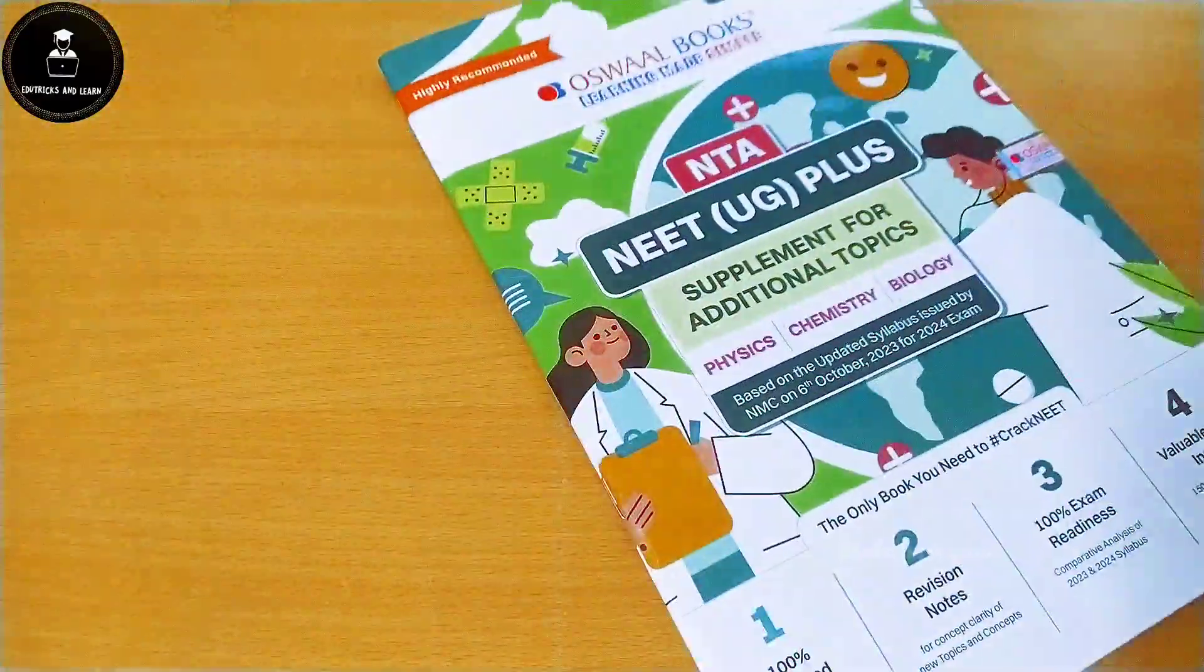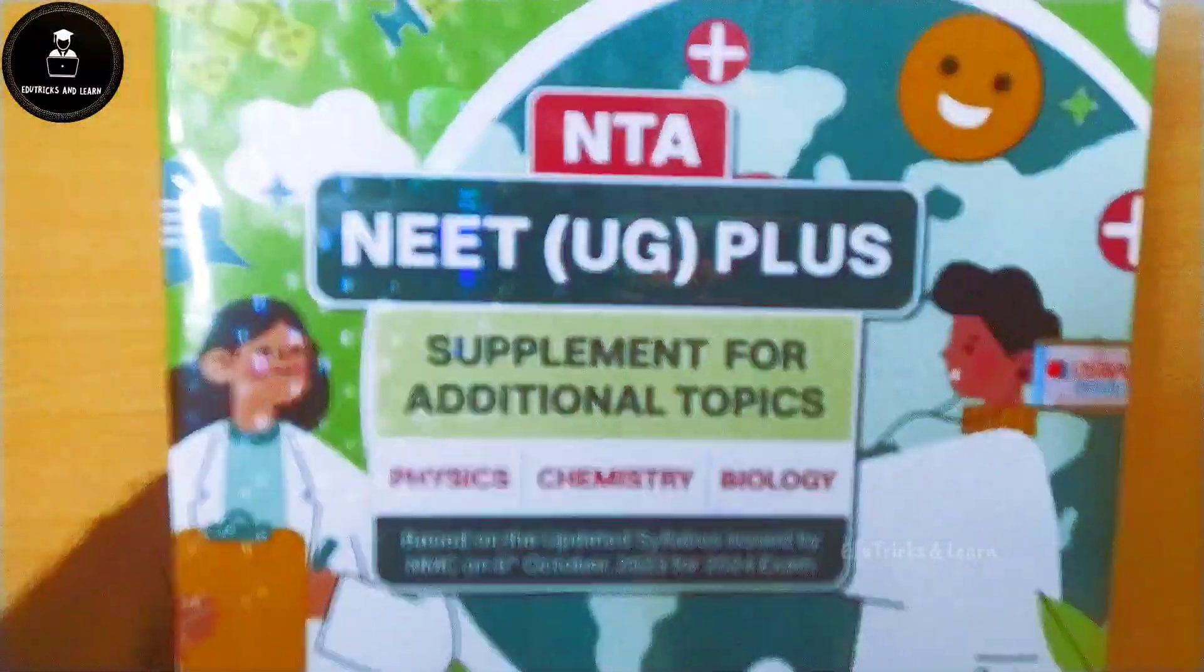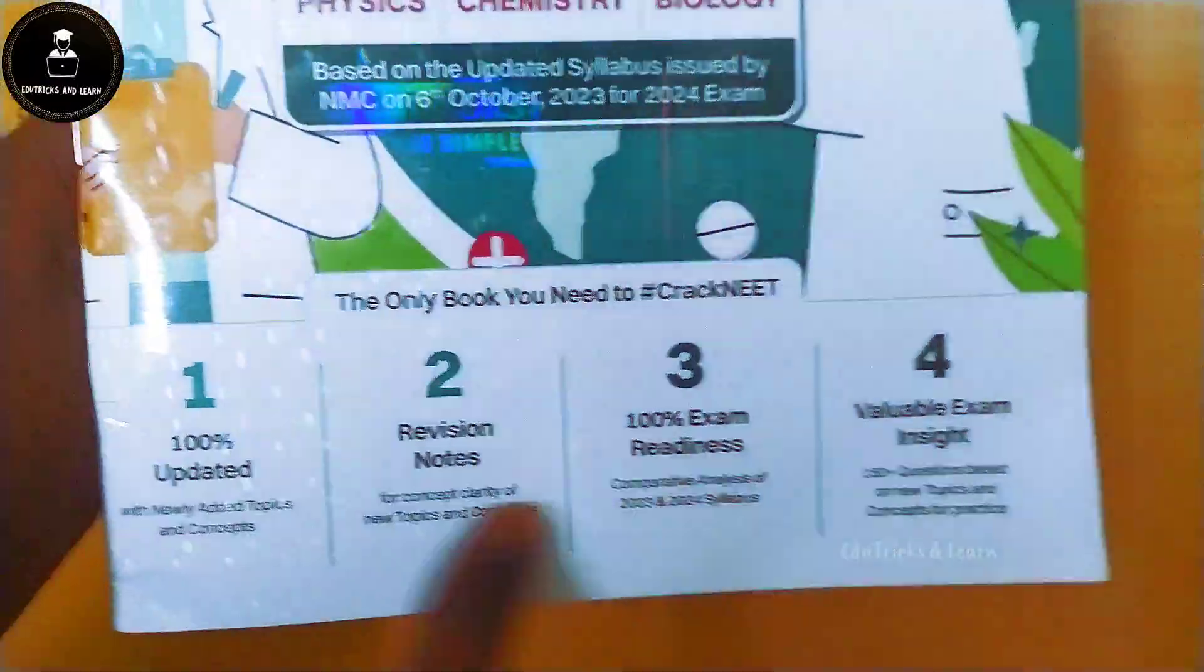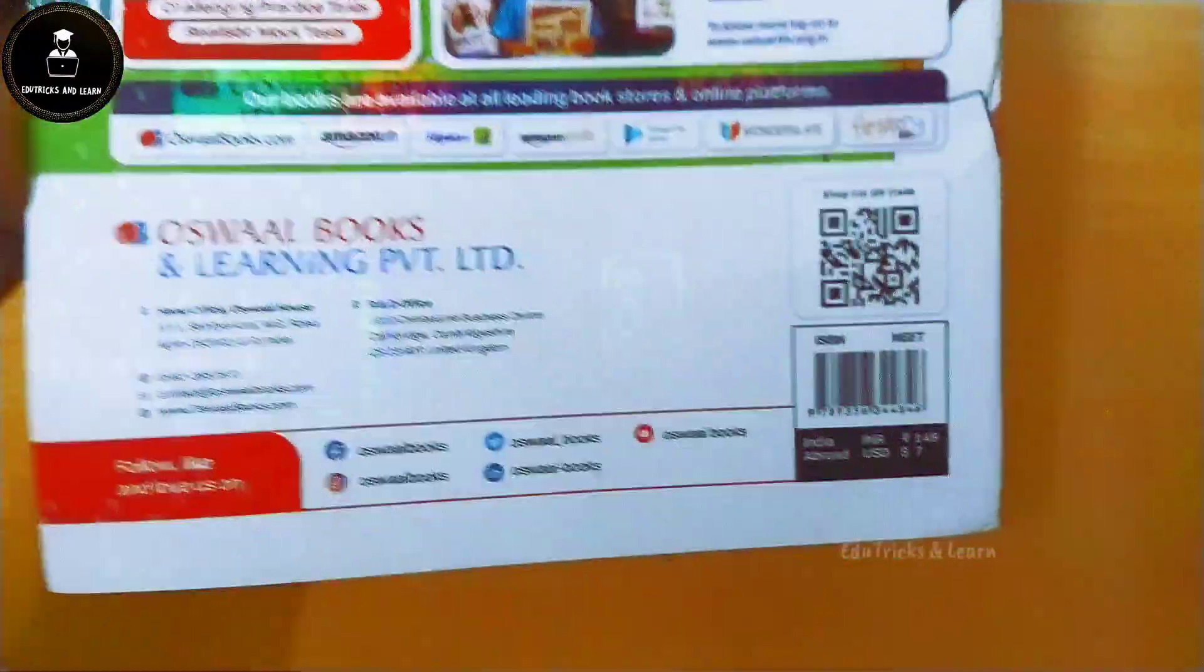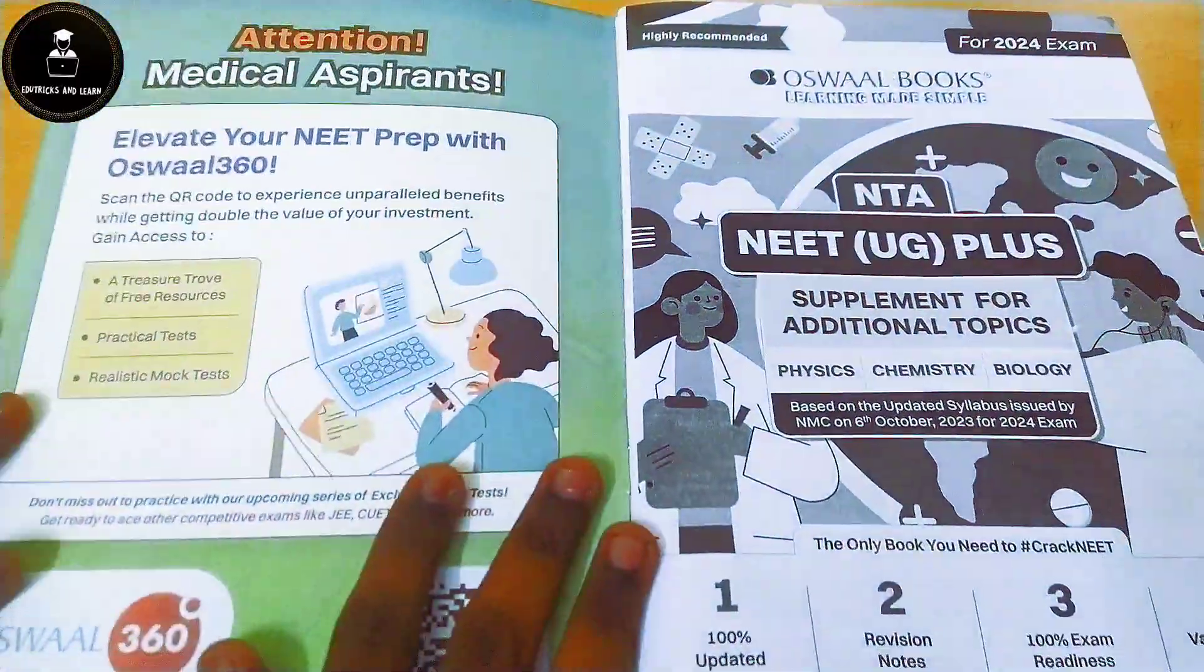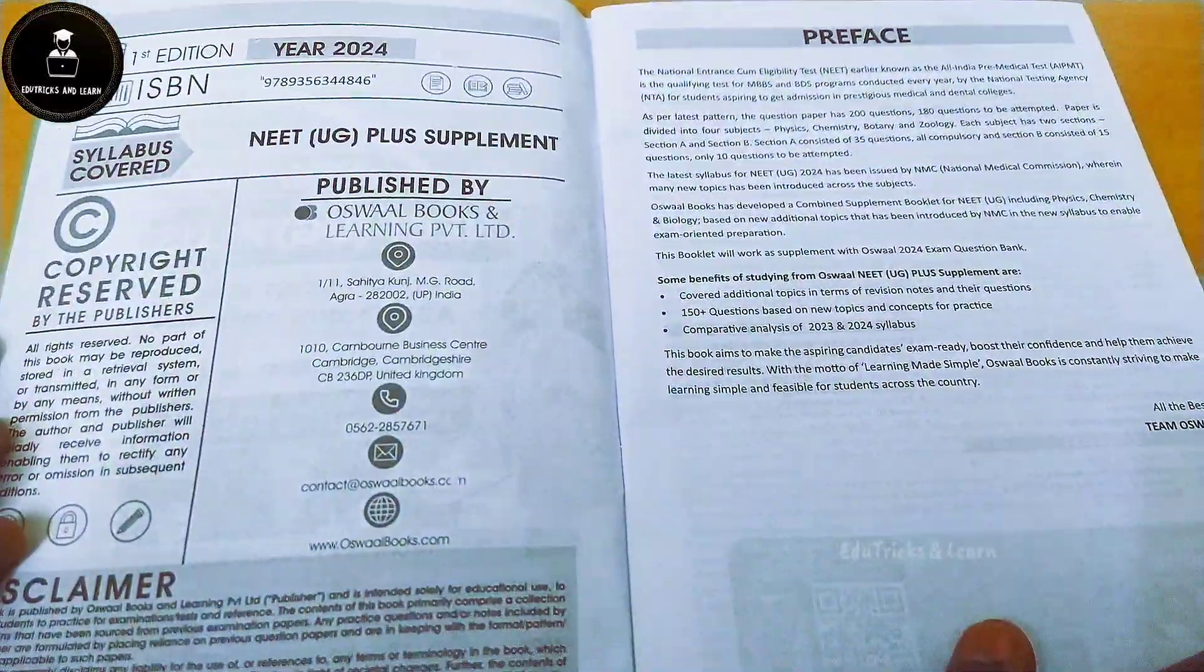For the included new topics, Oswal Books releases a complete supplementary book for physics, chemistry, and biology in a single book, giving the important questions, the new topics which are added, and the formulas which deal with that chapter in that one book for the whole syllabus of physics, chemistry, and biology. This is that book.